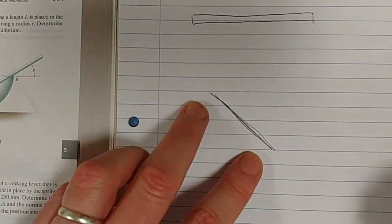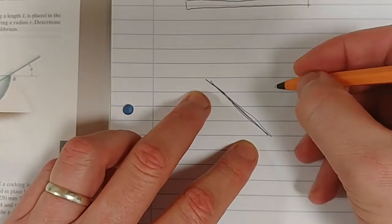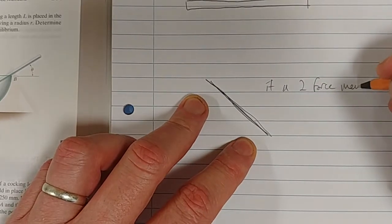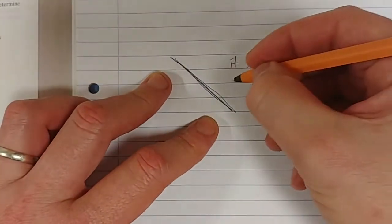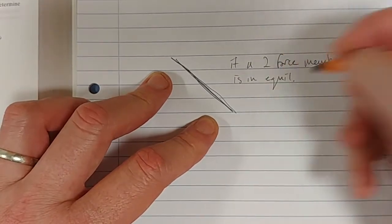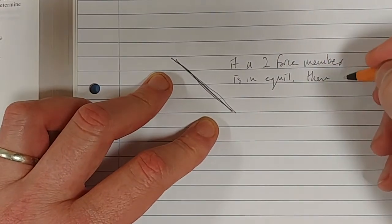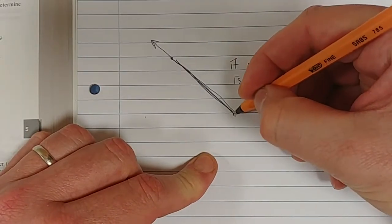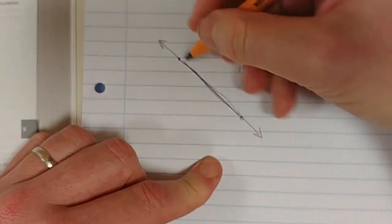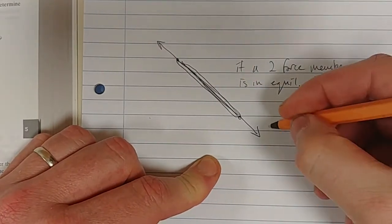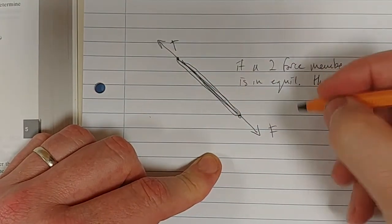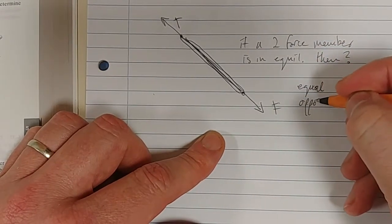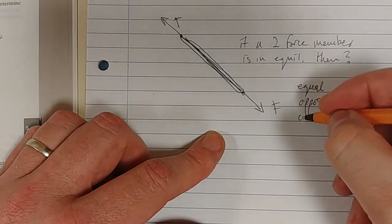What do we know about a two-force member? Let's just recall a two-force member. A two-force member, essentially, if it is in equilibrium, if a two-force member is in equilibrium, then what? Then the forces must be equal, they must be opposite, and they must be collinear.